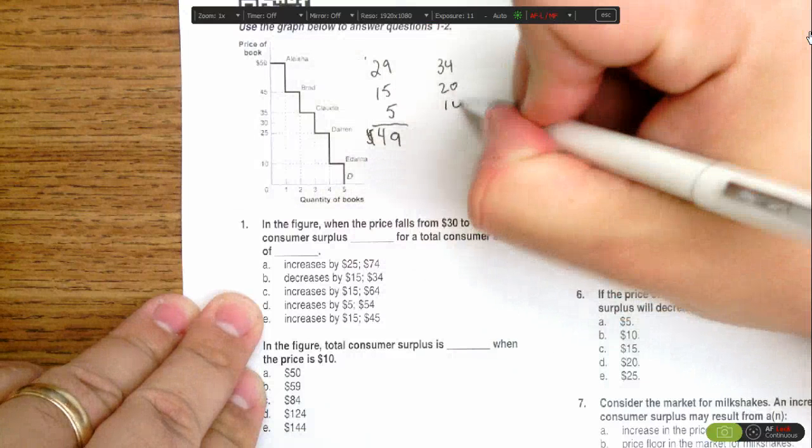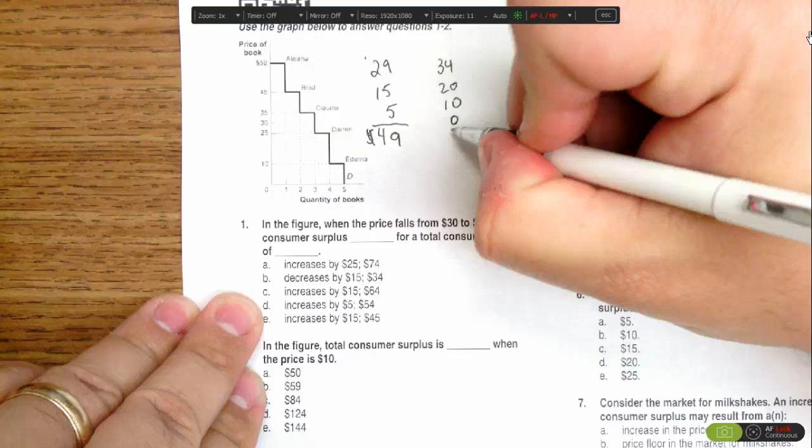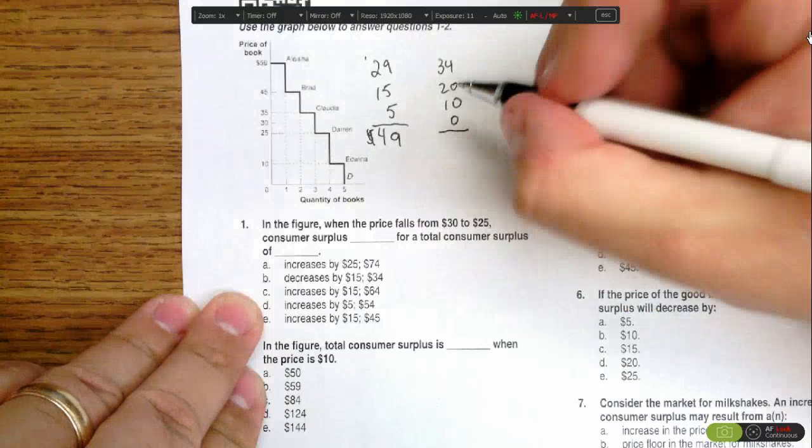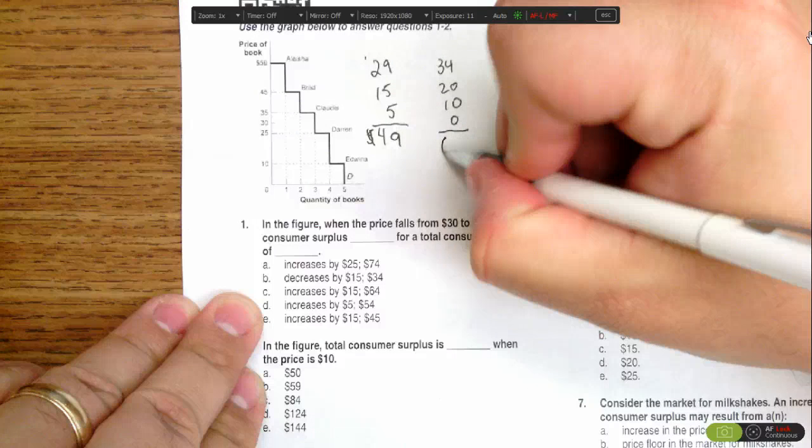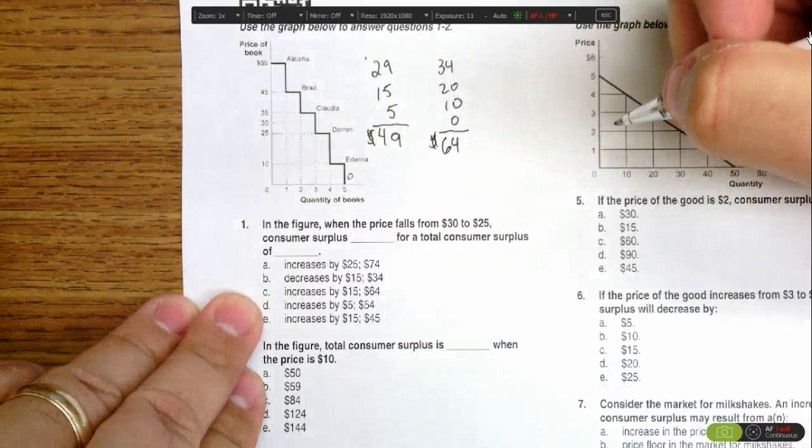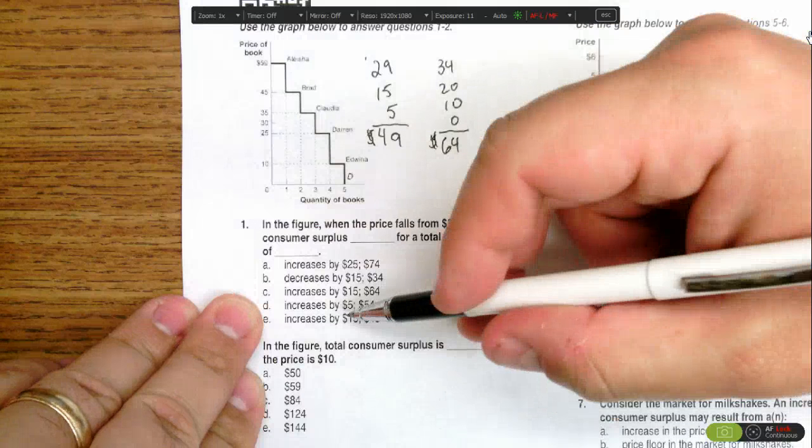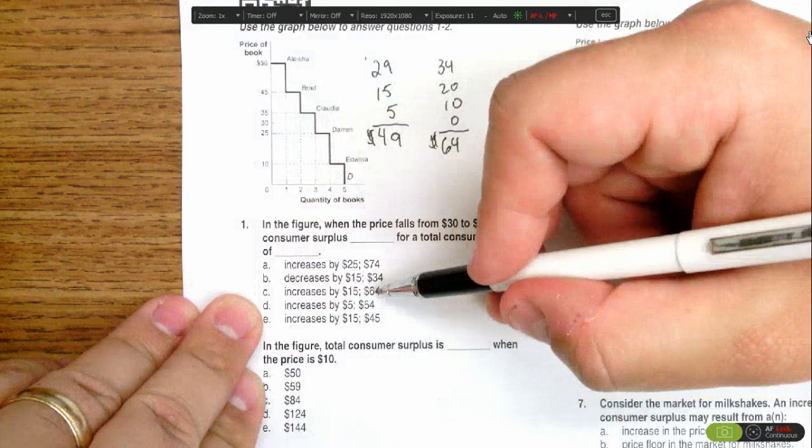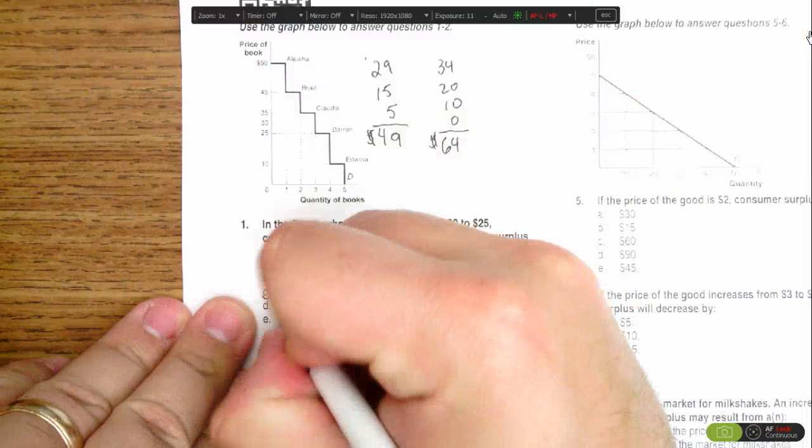and Darren is getting $0 because the price is the maximum he's willing to pay. When we add that up, we find now that total surplus is $64 in the market. So we find that consumer surplus increases by $15 to a total of $64. So the answer would be C.